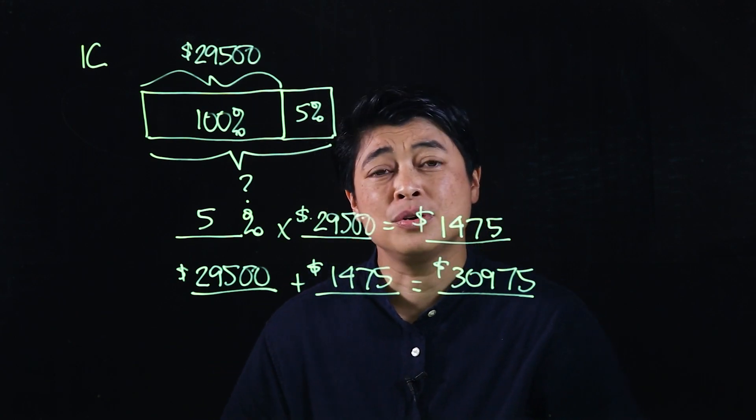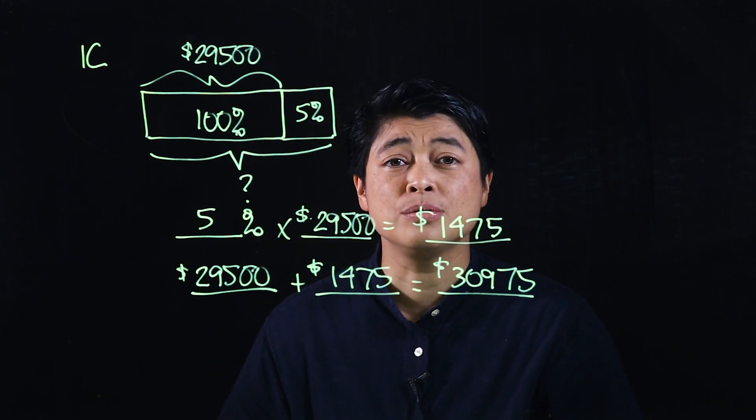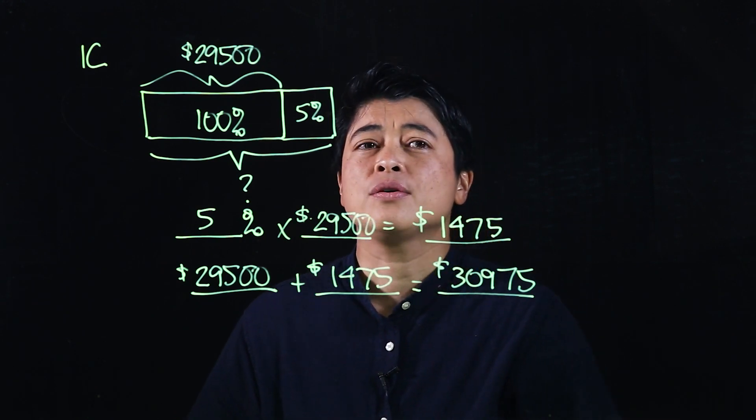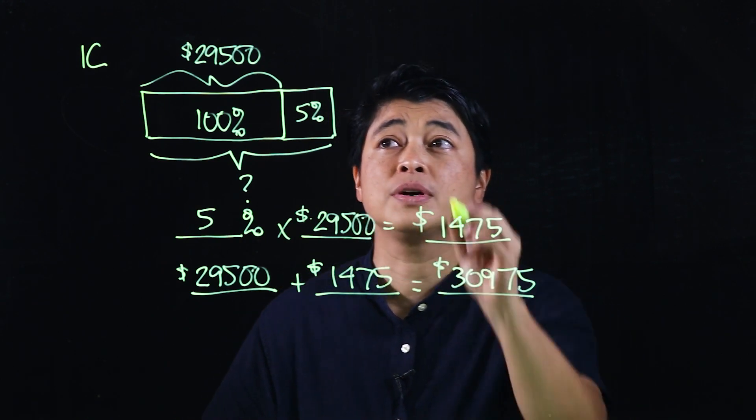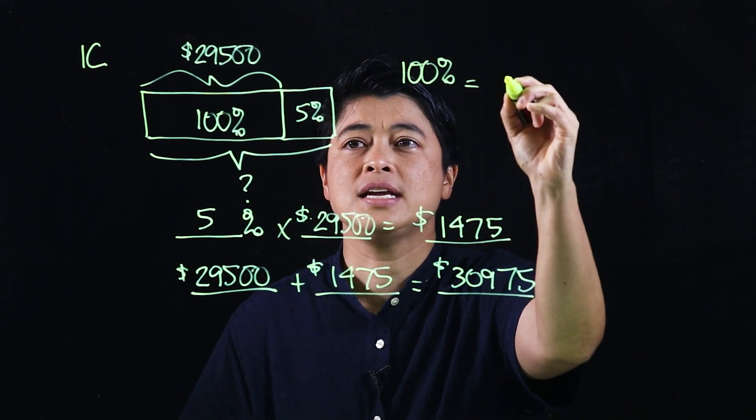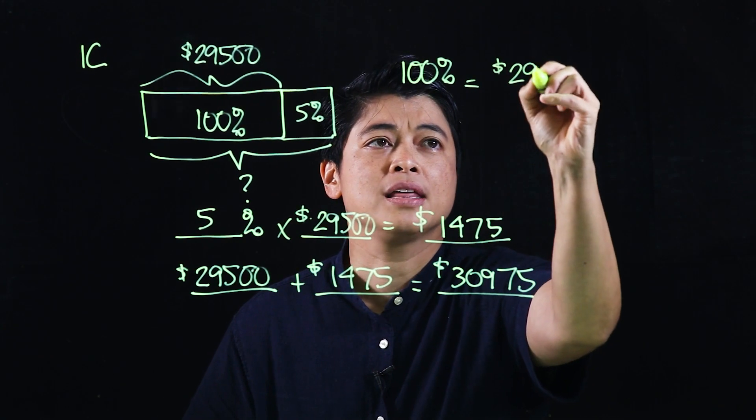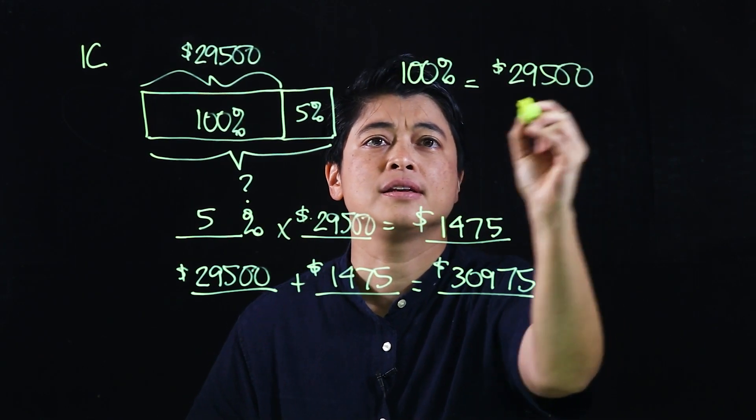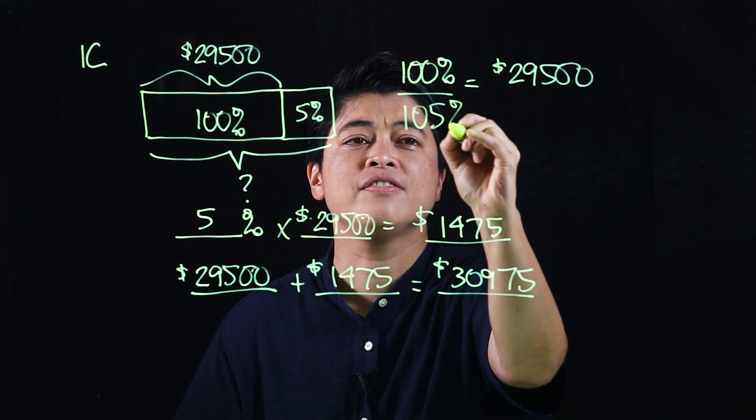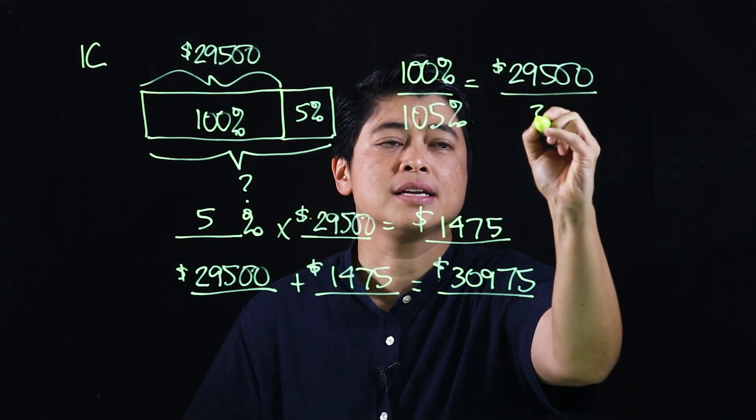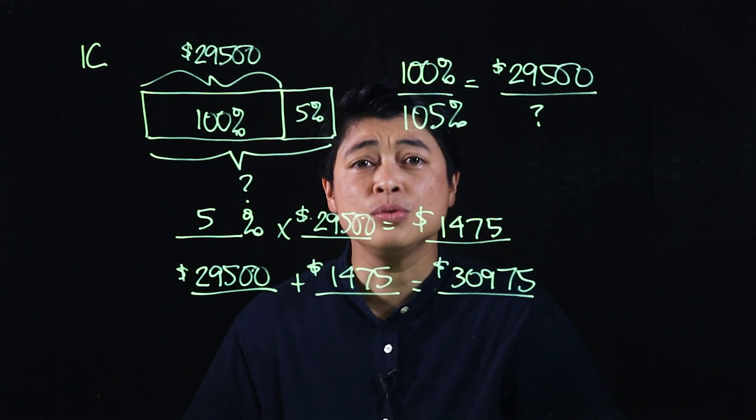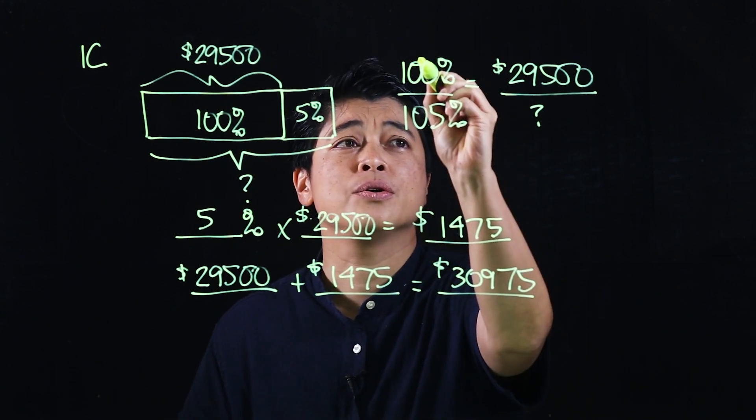I said it's most likely easier if we just do the equivalent fraction approach. The equivalent fraction approach would have been: 100 percent equals $29,500. What we're looking for is 105 percent. I have two choices - either I go this way and then multiply, or I can go this way and then multiply.